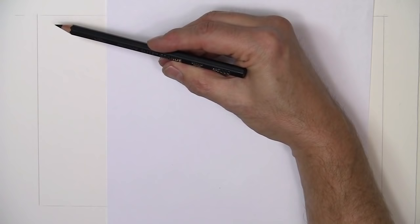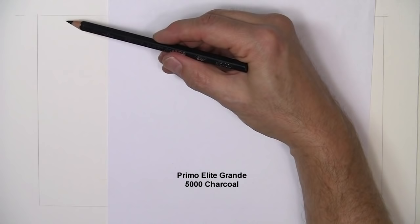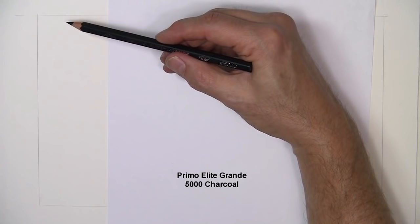I'm going to start off by making just a strip of charcoal over here on the left using the Primo Elite Grande 5000 pencil. It's one that I mentioned in a previous video. The reason I'm going to use this pencil is it's just a very nice dark value and it will help accentuate the different textures a little bit more that all of these different blending tools will create.